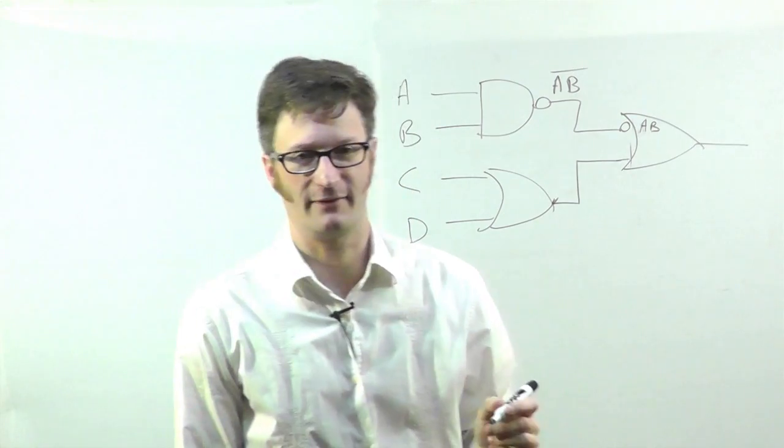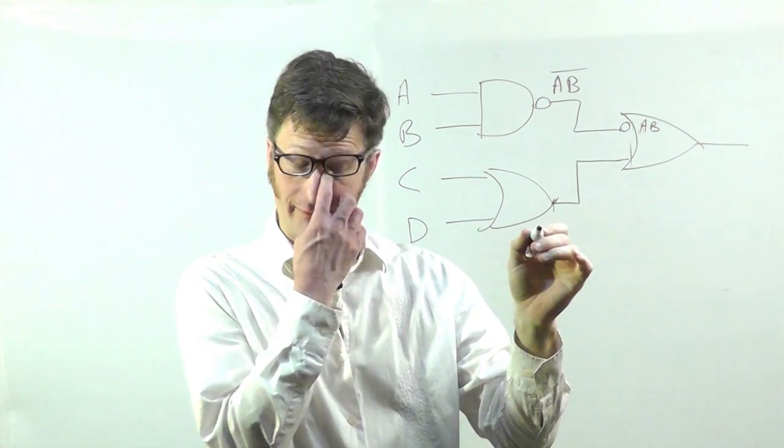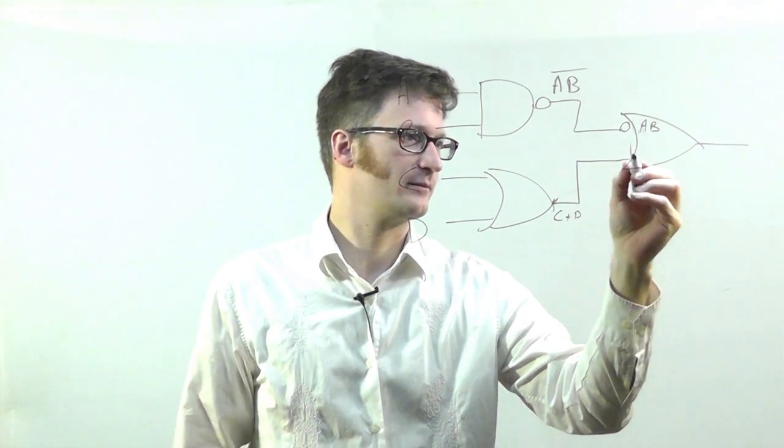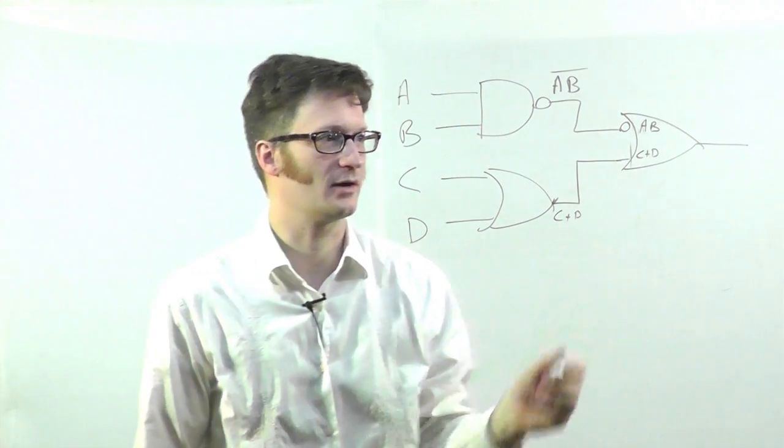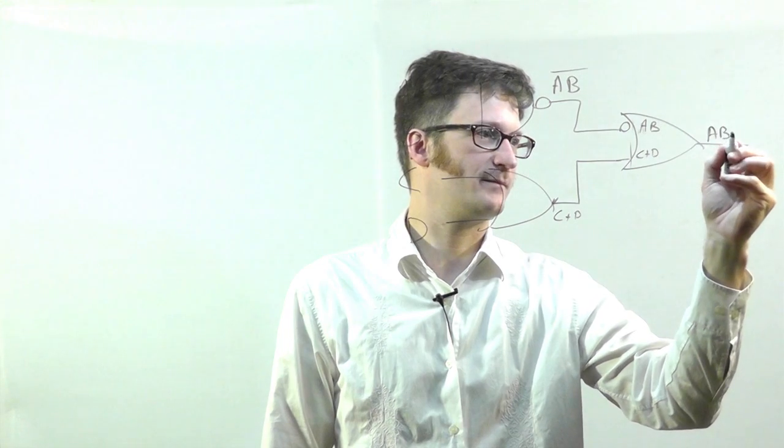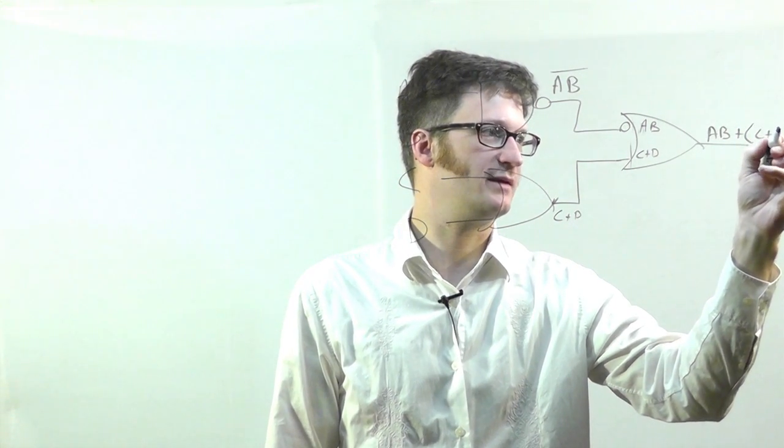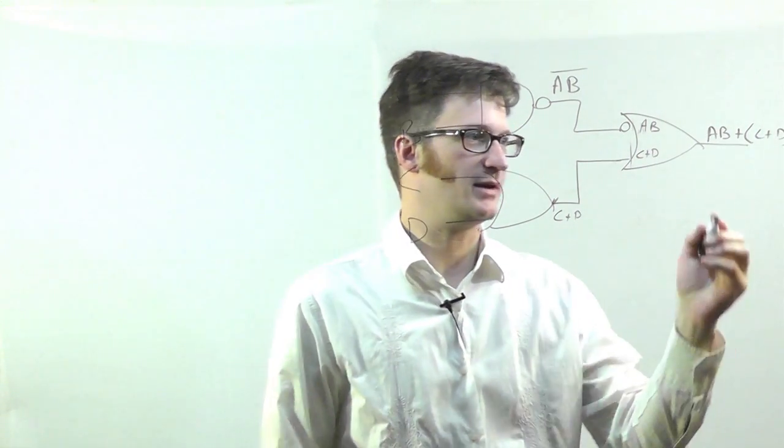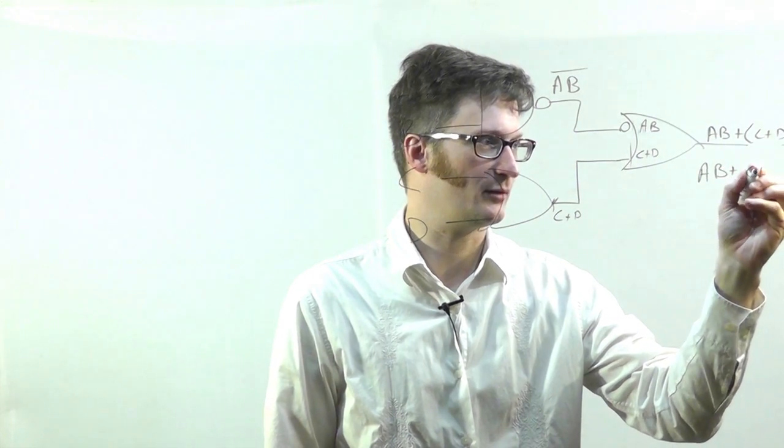I'll write on the inside of this OR gate what it is. And here we have C OR D. And C OR D, just because I'm doing it up here. So we have A B OR C OR D. Which could really just be A B OR C OR D.